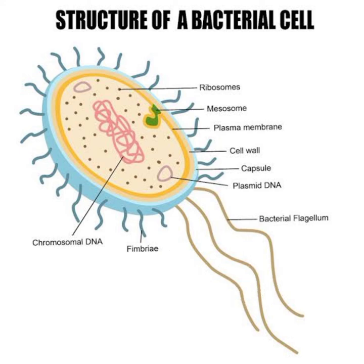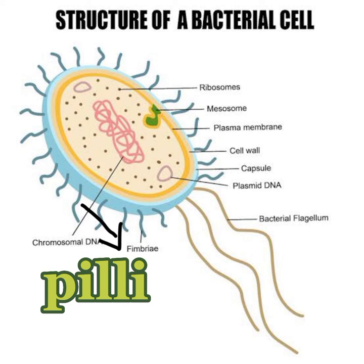Bacteria also have fimbriae or pili. These are structures used for attachment to any substratum — for example, bacteria that cause tooth decay use fimbriae and pili to attach to teeth, intestines, or other surfaces like rocks. Essentially, fimbriae and pili help bacteria adhere to any substratum.